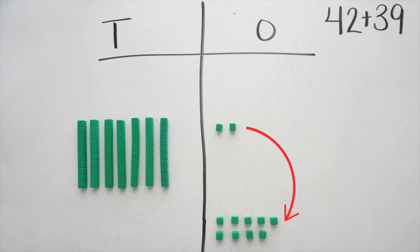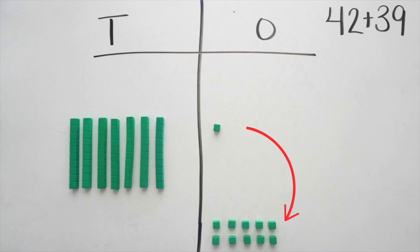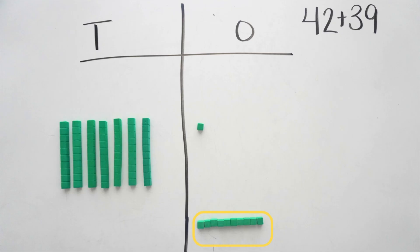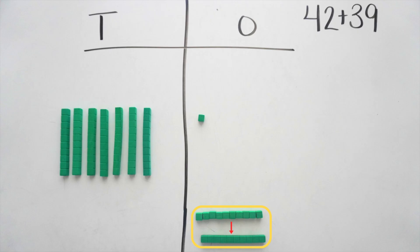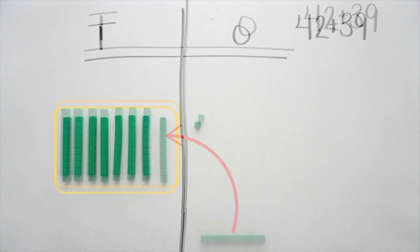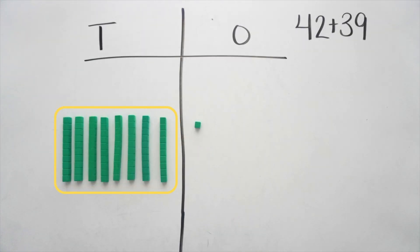Just like with comparing and rounding, you can use base-10 blocks to show addition with whole numbers and decimals. And when they have more than 10 units or 10 rods, they can trade for the next place value, which shows exactly why regrouping works.